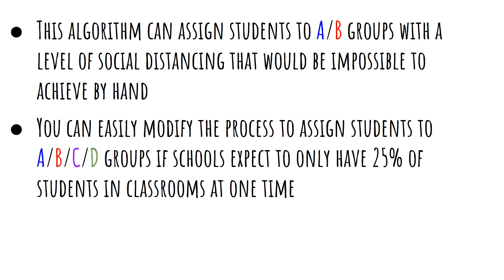You can easily modify this process to assign students to A-B-C-D groups. Schools expecting only 25% of students in the classroom at one time can set up ABCD groups so that A plus B is about 50% of each classroom and C plus D is the other 50%. With a rolling transition, maybe for a few weeks you just have the A's in the building, then just the B's, then just the C's, just the D's. After a period of time you bring back A plus B together, then swap to C plus D together. You can easily modify the algorithm to accommodate that.